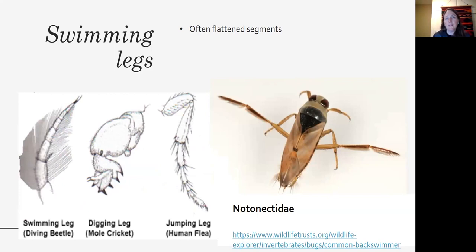Swimming legs are often flattened, kind of like a paddle. And they are often coated with lots of hairs and the hairs increase surface area and help create thrust. And so you're getting a wider blade on your paddle when you have a lot of hairs.